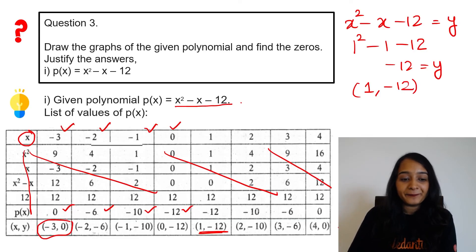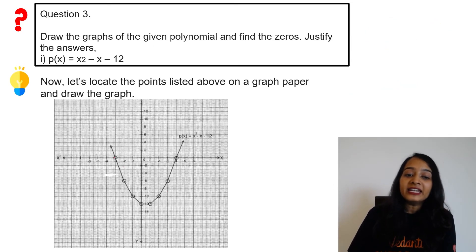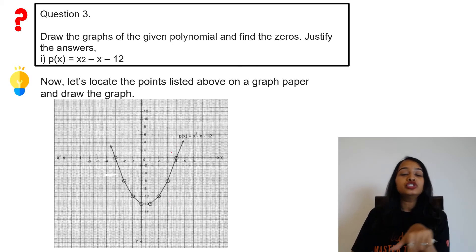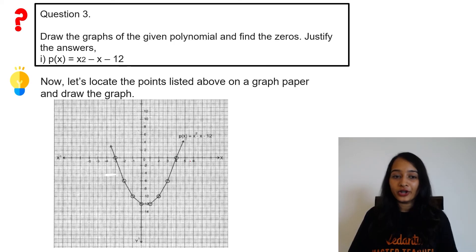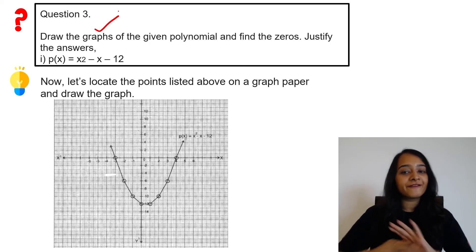Now the graph. You plot the points: (-3, 0), (-2, -6), (-1, -10), etc. Plot these dots and join them to get a U-shaped graph, indicating it is a quadratic polynomial. Now locate these points. We have to draw the graph. So, draw the graph. Done.